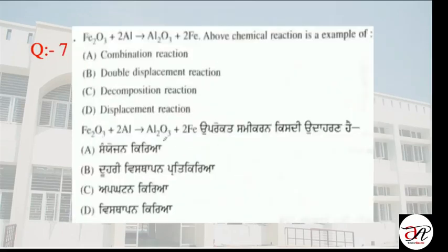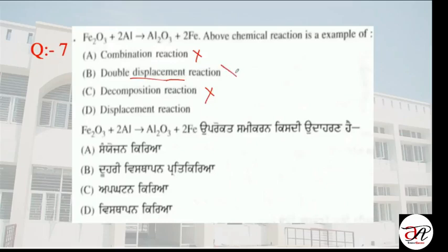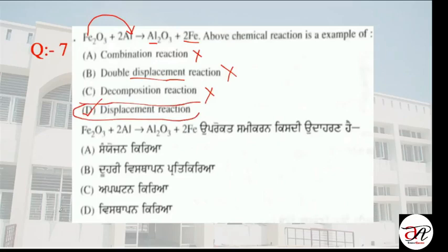Question number 7: Fe2O3 + Al → Al2O3 + Fe. This chemical reaction is an example of a displacement reaction. Decomposition means to break apart. Double displacement means two elements swap. But here, aluminum has displaced iron from its compound — iron is left out — so this is a single displacement reaction.